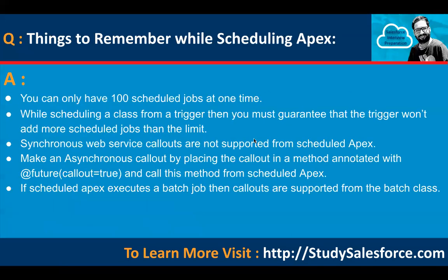Things to remember while scheduling Apex: you can only have 100 scheduled jobs at one time. While scheduling a class from a trigger, you must guarantee the trigger won't add more scheduled jobs than the limit. Synchronous web service callouts are not supported from Scheduled Apex — make an asynchronous callout by placing it in a method annotated with @future(callout=true) and calling that method from Scheduled Apex. If Scheduled Apex executes a batch job, callouts are supported from the batch class.